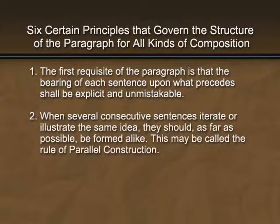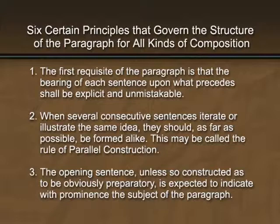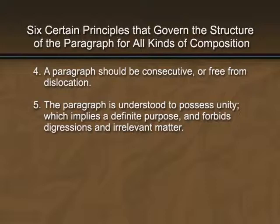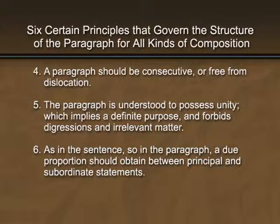Number two: when several consecutive sentences iterate or illustrate the same idea, they should, as far as possible, be formed alike. This may be called the rule of parallel construction. Number three: the opening sentence, unless so constructed as to be obviously preparatory, is expected to indicate with prominence the subject of the paragraph. Number four: a paragraph should be consecutive or free from dislocation. Number five: the paragraph is understood to possess unity, which implies a definite purpose and forbids digressions and irrelevant matter. And number six: as in the sentence, so in the paragraph, a due proportion should obtain between principal and subordinate statements.